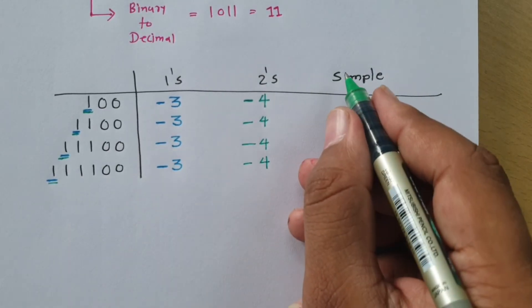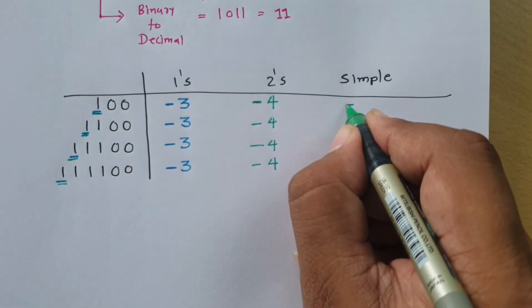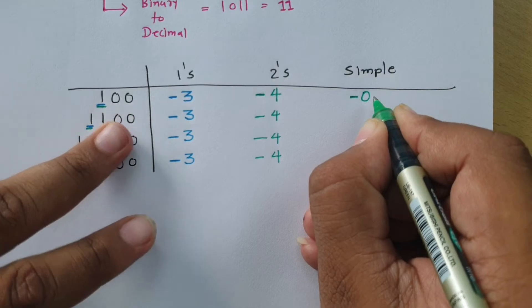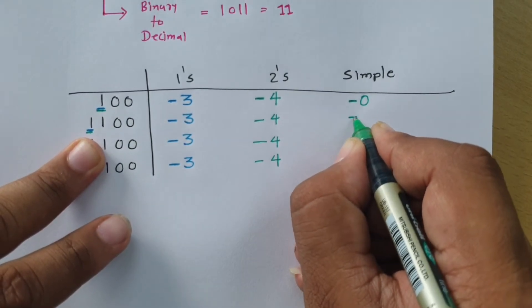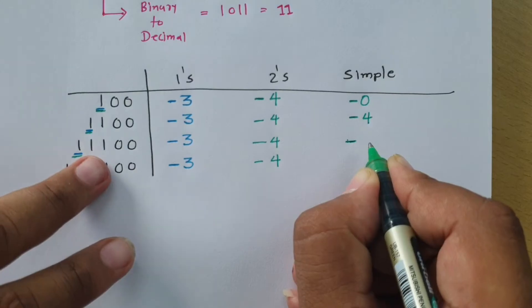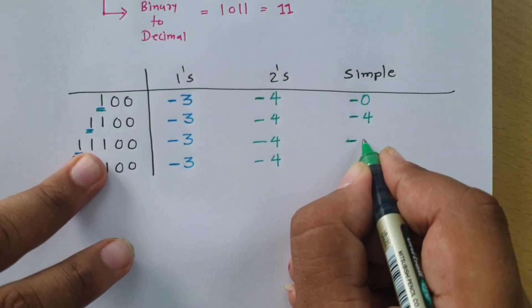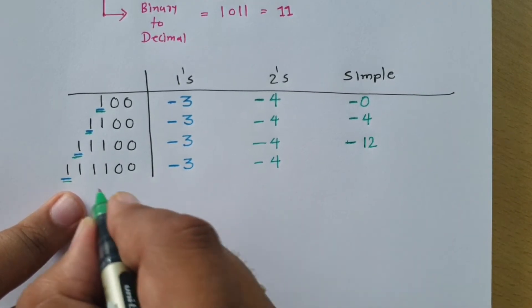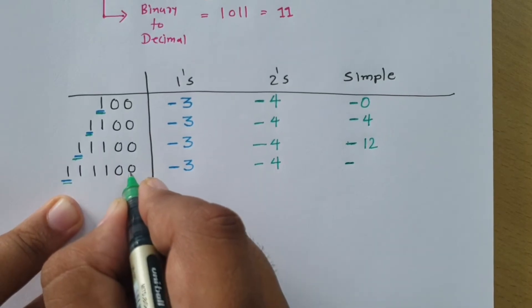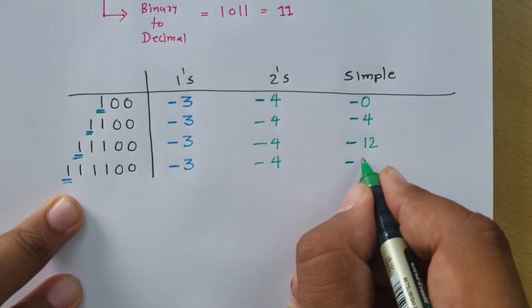In simple sign representation, the first bit indicates the sign. The first number with remaining bits 00 represents minus 0. The next with 100 represents minus 4. The next with 1100 represents minus 12 (8 plus 4). And the last number with first bit one followed by 11100 represents minus 28 (16 plus 8 plus 4).